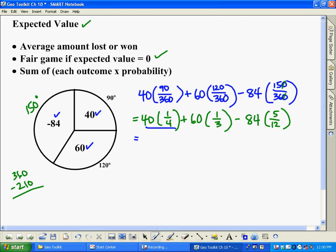Well, what's a quarter of 40? A quarter of 40 is 10. A third of 60 would be 20. And over here, a twelfth of this would be 7, and 7 times 5 is 35. So we'd have minus 35. 30 minus 35 is negative 5. So negative 5 is what we would call our expected value.